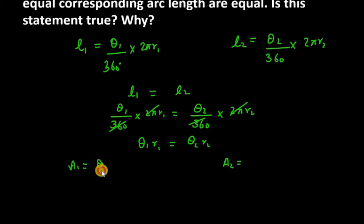Area A₁ is equal to θ₁/360 × πr₁ square. Similarly for A₂, we have θ₂/360 × πr₂ square.